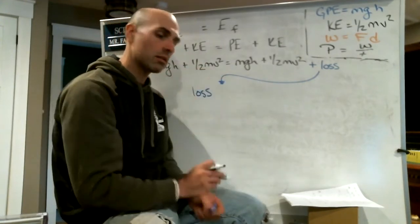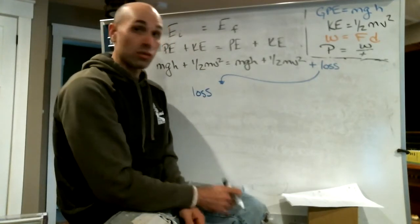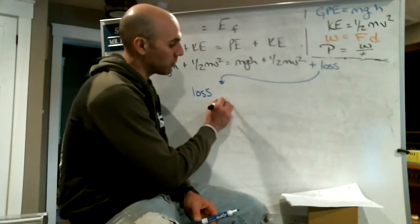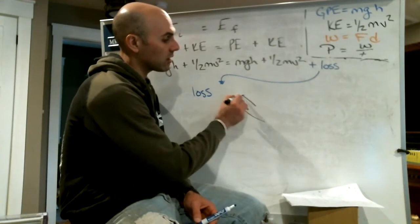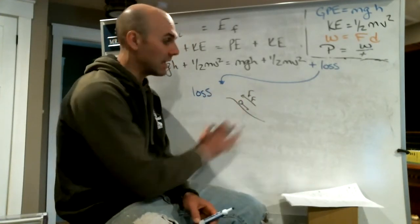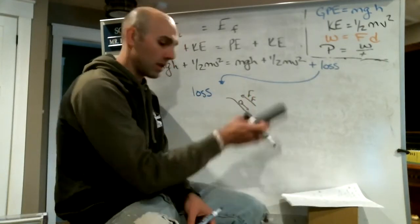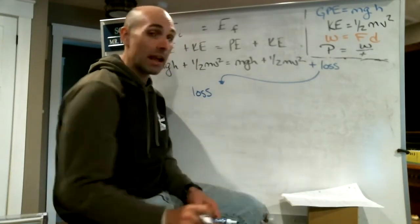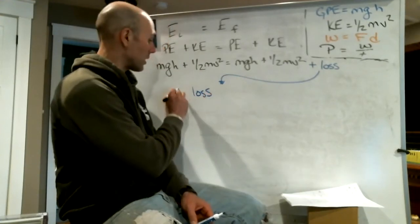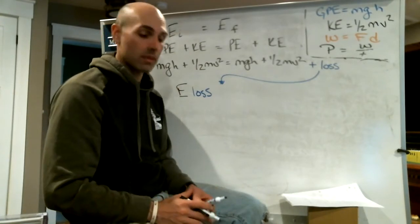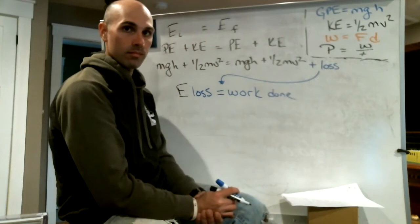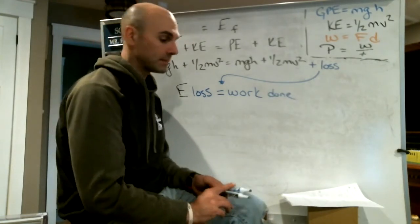Think about this: when you coast down a hill in a car, the car will eventually slow down because of the friction between the tires and the road. The force of friction opposes the motion — it's opposing gravity pulling the car down the hill — so friction is doing work to slow the car down. In order to do that work, it needs some type of energy. So the energy loss is equal to the work done.